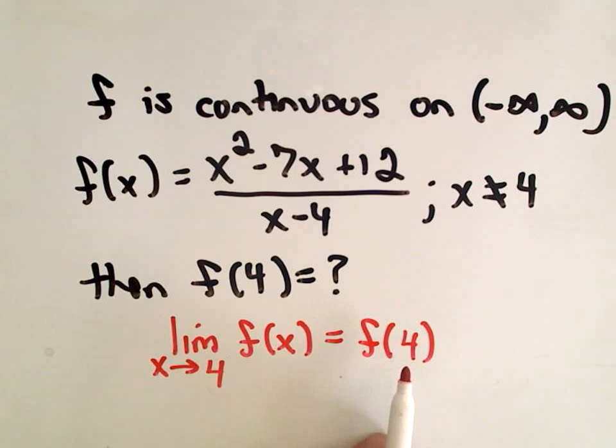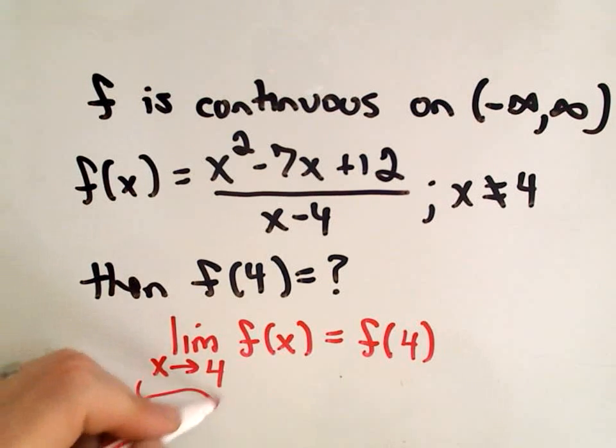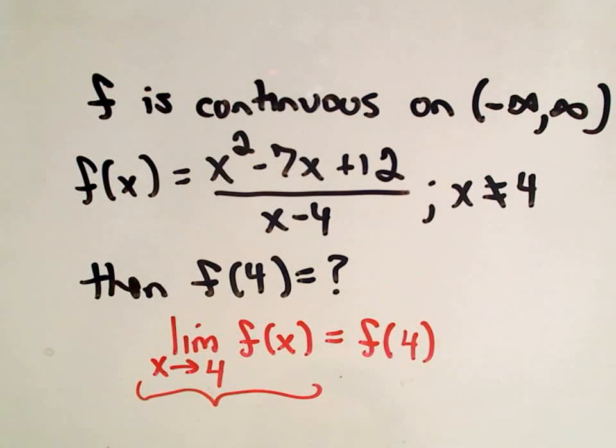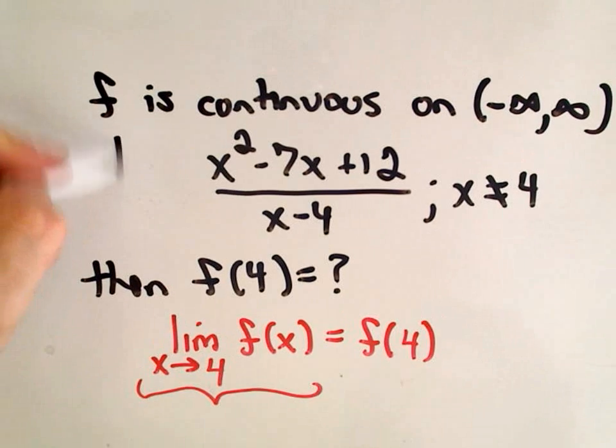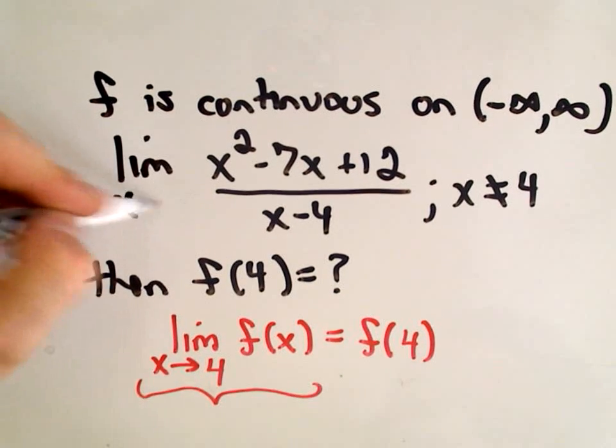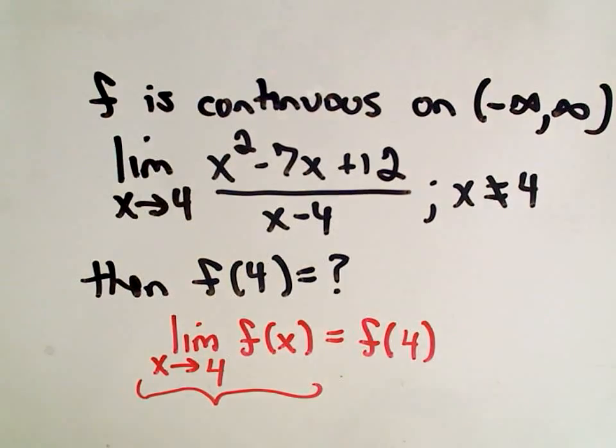So it says to figure out the value of f(4), actually we can just simply compute the limit as x approaches 4 of the function. Well, here's my function. Our function is x squared minus 7x plus 12 for x not equal to 4. Well, it says that's what we need to take the limit as x approaches 4 of. So it says if I take the limit of this, I will now know the value of f(4).